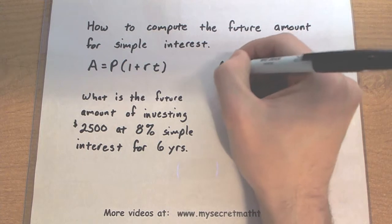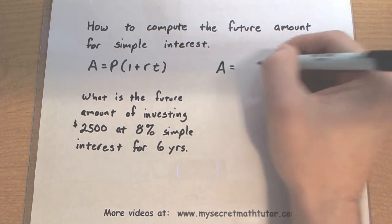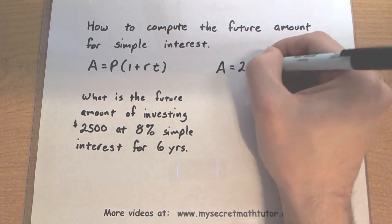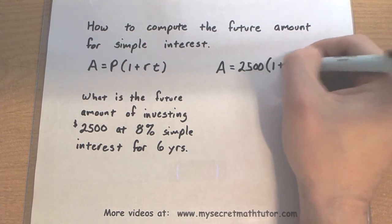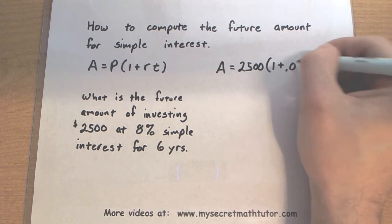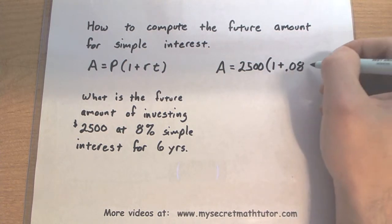So what I want to know is, what is the future amount when I invested $2,500 at 8%, remember to write that as a decimal, and I'm going to do it for 6 years.